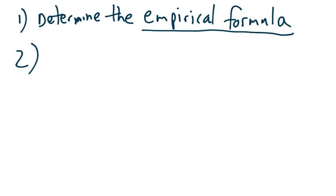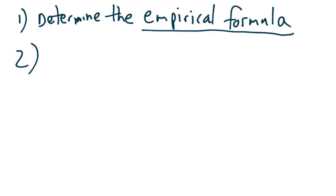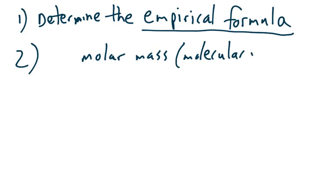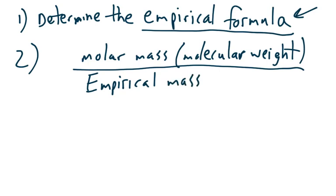Here's step number two. They're going to tell you what the molar mass of the actual compound is — sometimes it's called the molecular weight, molecular mass, or molar mass; all different names for the same thing, and it will be given in the question. In step two, you're going to take the molar mass and divide it by what is called the empirical mass — that is, the molar mass of the empirical formula. That's why you need the empirical formula in step one.